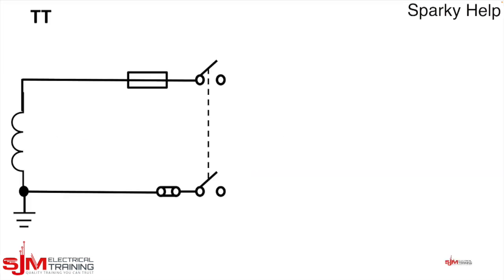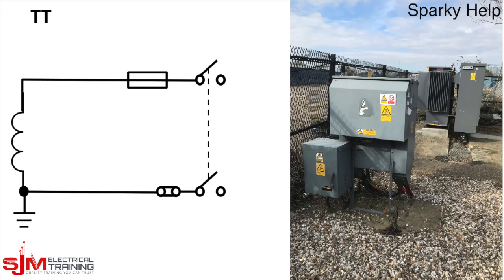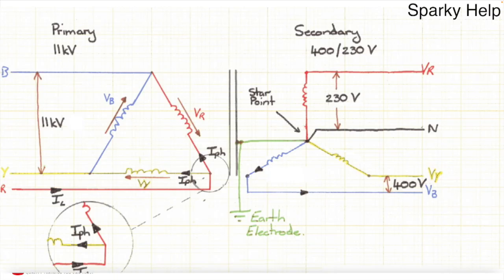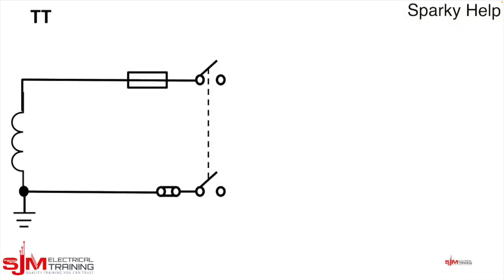So we start with the transformer. This is a delta to star distribution transformer, that's the 11,000 down to 400 slash 230 as shown. We have the winding of the transformer. We're going to draw it just single phase.